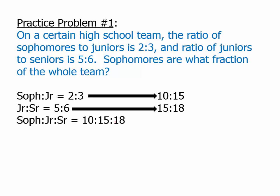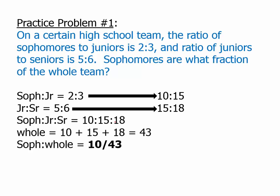And, of course, if sophomores are 10 parts, juniors are 15 parts, and seniors are 18 parts, we can find the whole just by adding the parts. The whole is 43, and so this means that sophomores to the whole would be 10 over 43. And so, that one we can find purely from strategy one, just combining the two ratios, finding equivalent fractions.